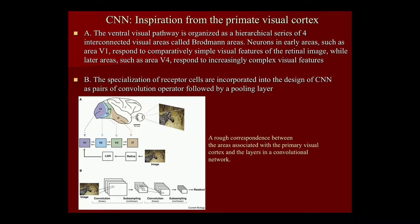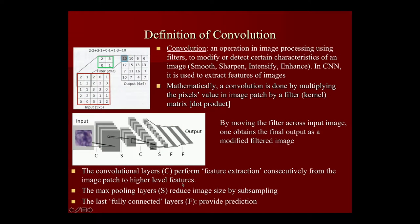The ventral visual pathway is organized such that different areas respond to different levels of image complexity, from simple to complex. The CNN models the receptor cells in the brain using multiple layers of convolution operators followed by pooling layers. Convolution is an operation in image processing used to smooth, sharpen, or enhance an image.